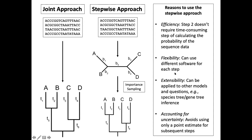Another reason for using the stepwise approach is extensibility: you can basically do this breaking up into multiple steps for any hierarchical Bayesian model. Here I'm talking about divergence time estimation, but in future directions — which I'll talk about a little at the end — we're currently applying this approach to inferring species trees from gene trees.